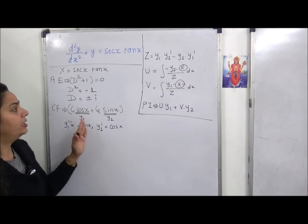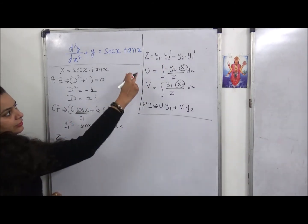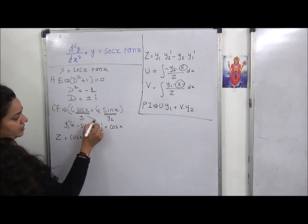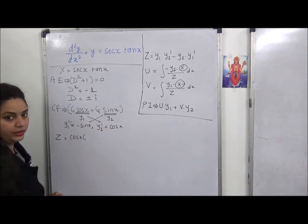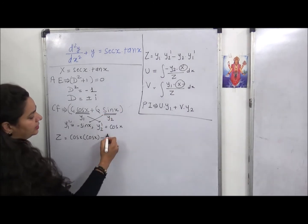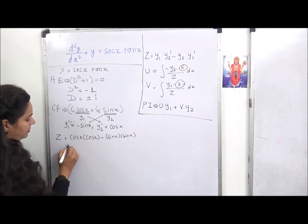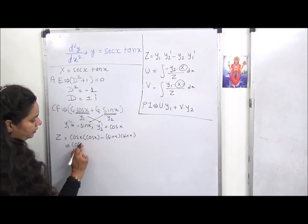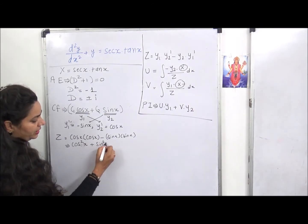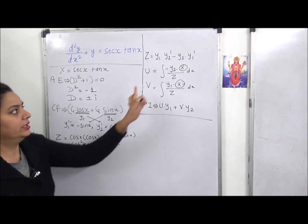Now we have everything; we just need to put the values into z. z = y1·y2' − y2·y1' = cos x · cos x − sin x · (−sin x) = cos²x + sin²x. Since sin²x + cos²x = 1, our z = 1.